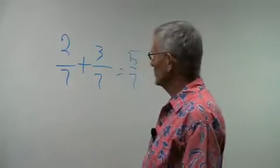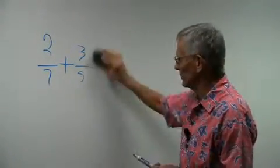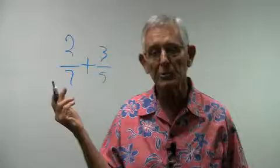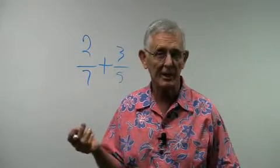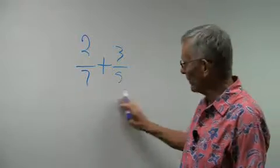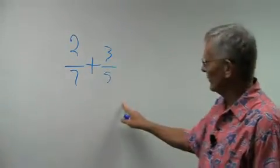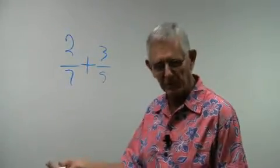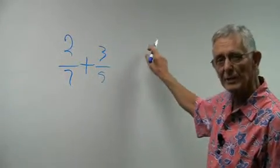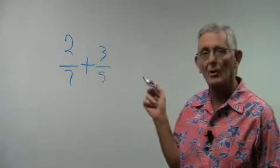Say we change this one from two-sevenths to three-fifths. Now we have a whole different problem, because we can't just add them together. One of the things we have to do is find the lowest common denominator — a number that both denominators will divide into evenly. One hint: it's always going to be a multiple of the largest denominator. So we're trying to figure out what number five and seven would both divide into evenly. You could go through all the multiples of seven and five, but that's a waste of your time. One of the easiest ways is what we call prime factoring.